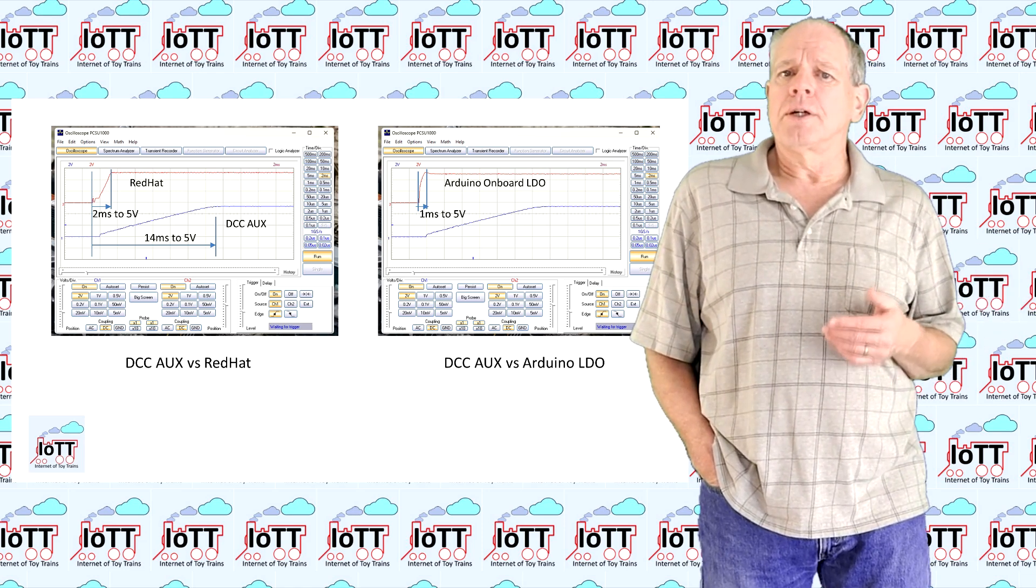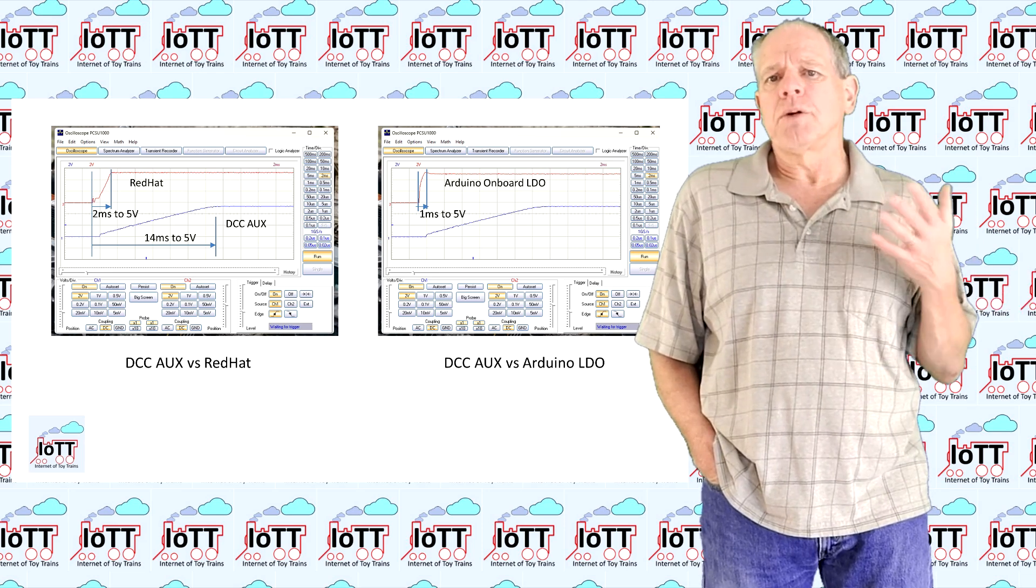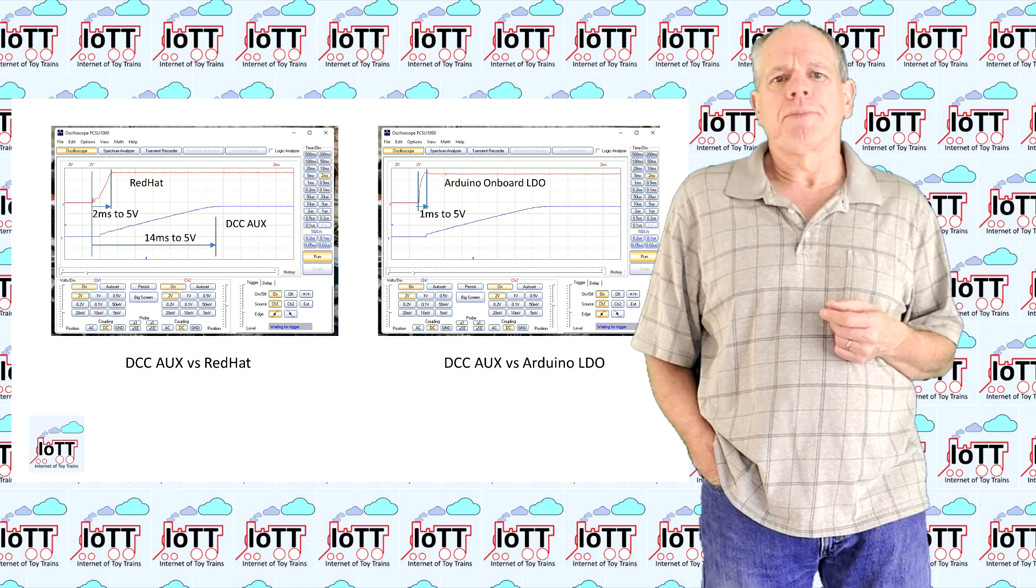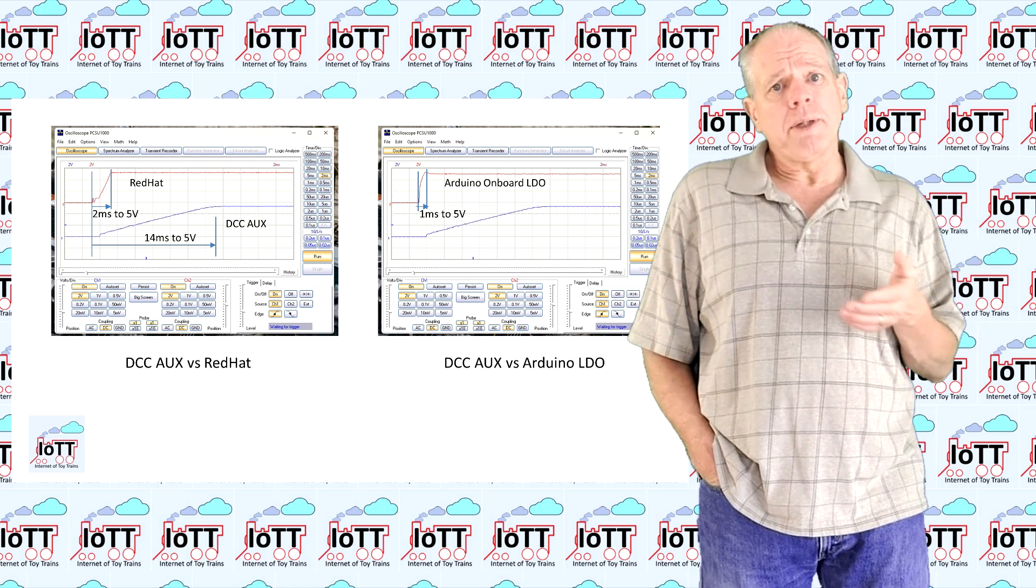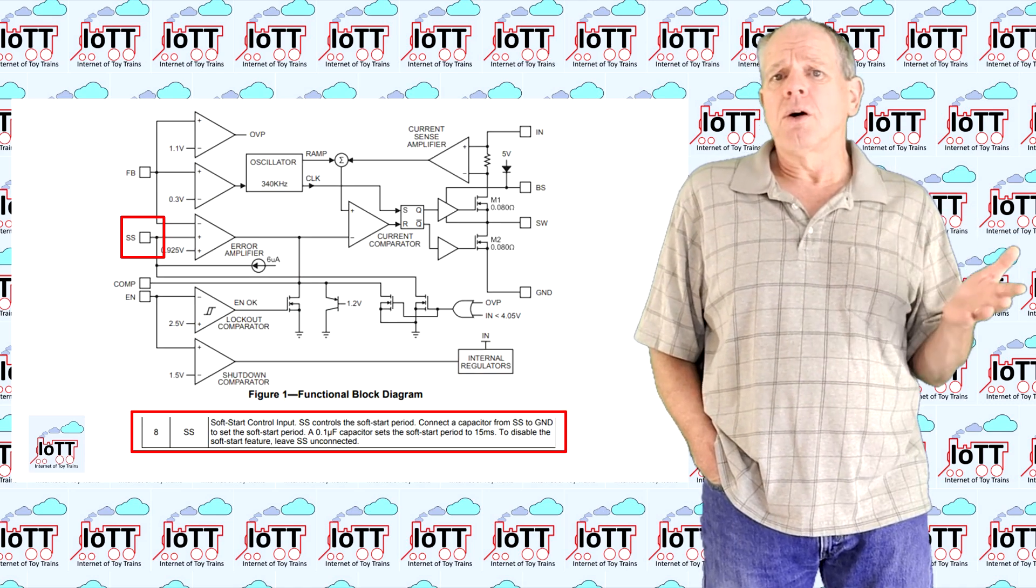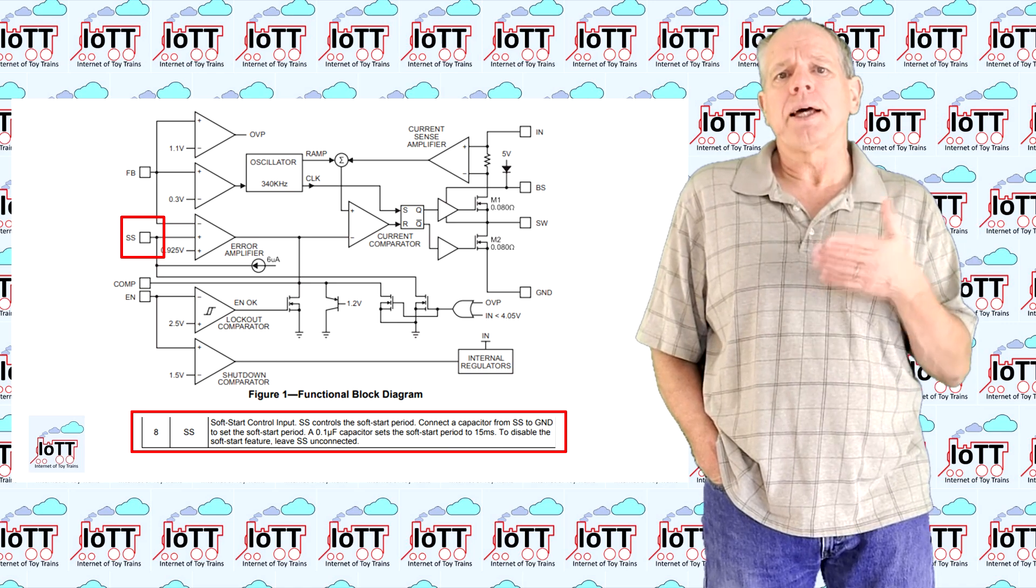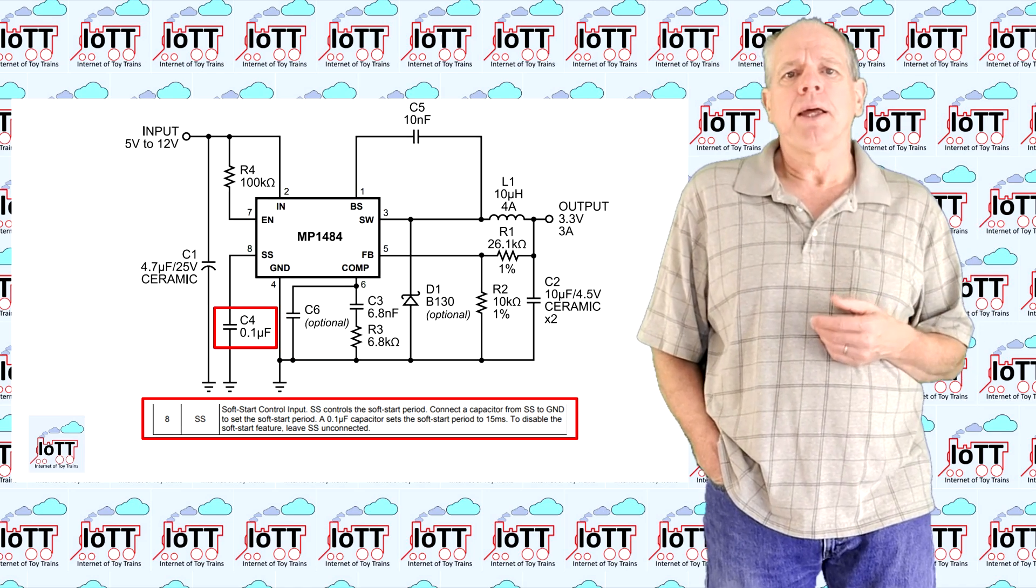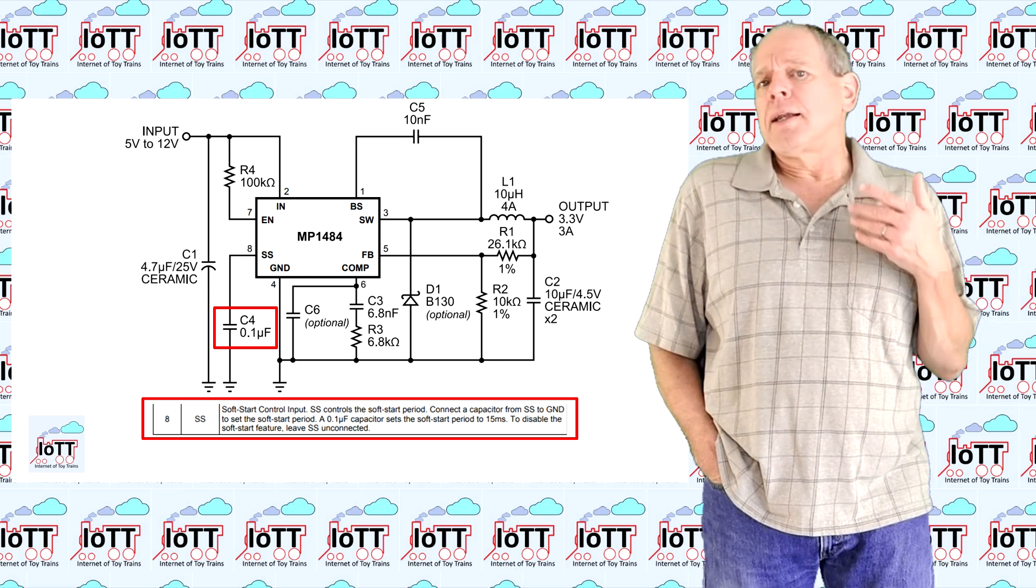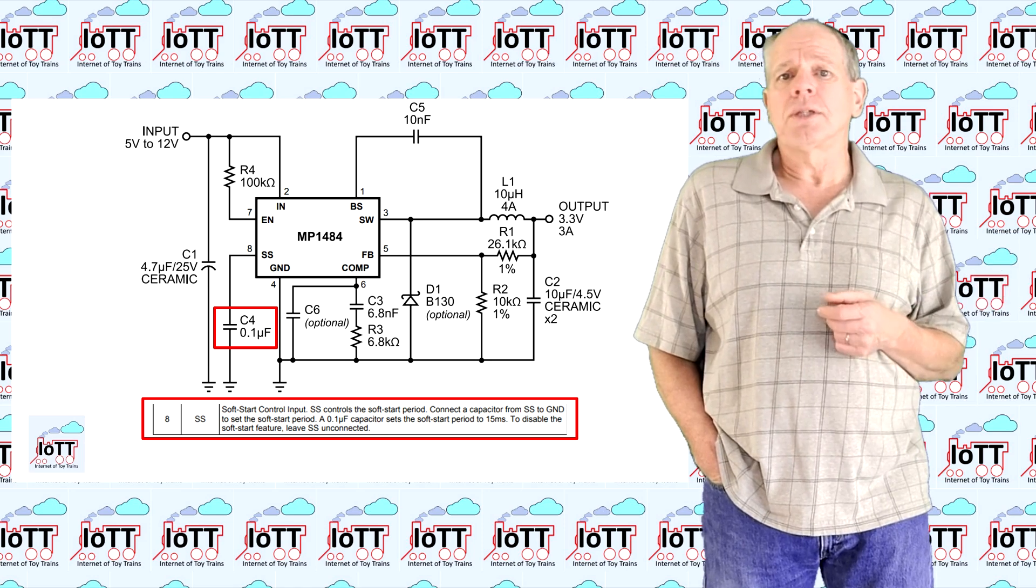The onboard LDO of the Arduino, on the other hand, needs only about 1ms to provide the 5V output once VIN is applied. This slow startup is not a bug, but a feature of the converter chip. It is called soft start and can be controlled using a capacitor attached to the SS pin. The standard value is 0.1uF and leads to a delay of 15ms, basically what I saw on the oscilloscope.